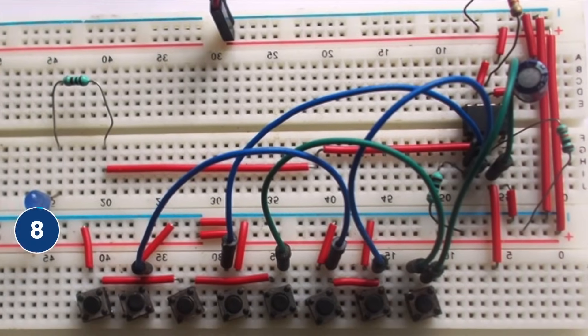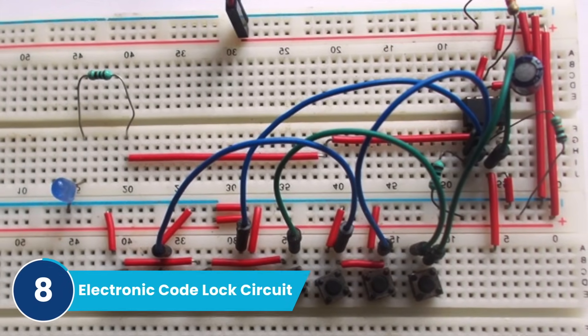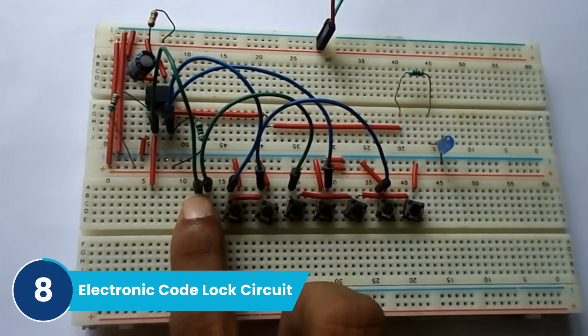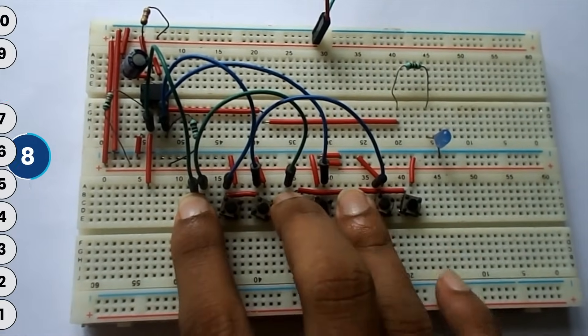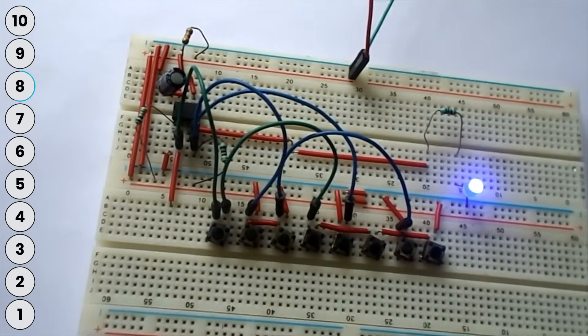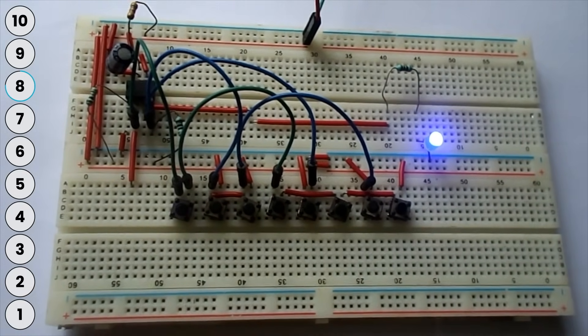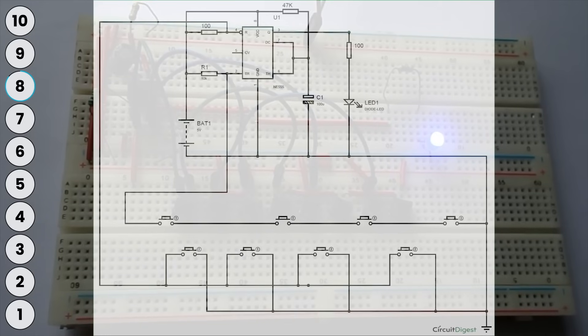Moving on at number eight, we have the electronic door lock circuit. The circuit has some push buttons and you have to press them in the right sequence to turn on something, in this case an LED. The beauty of this project is it can be built simply on a breadboard with a few push buttons, a 555 timer, and a few connecting wires.